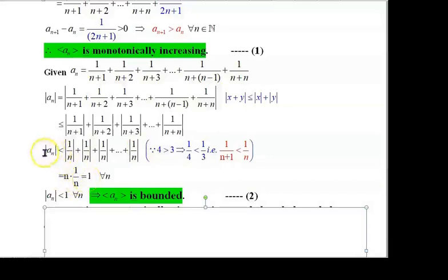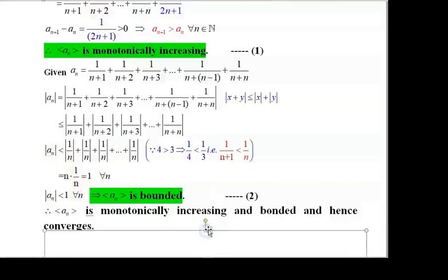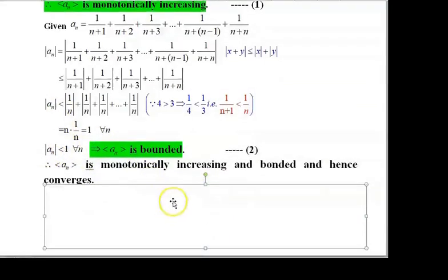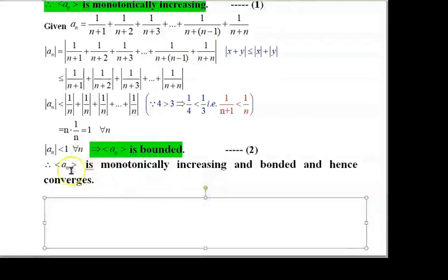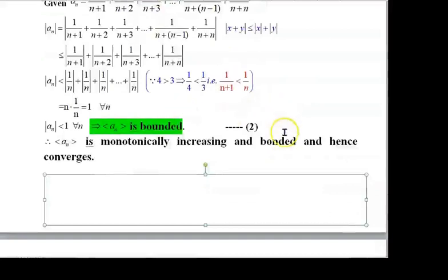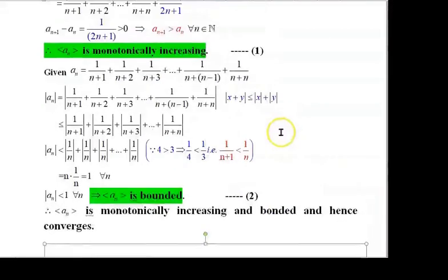|aₙ| < 1 for all n in ℕ. Therefore, aₙ is bounded. Thus the sequence aₙ is monotonically increasing and bounded above, hence it converges.